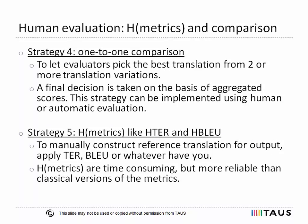The fourth strategy is one-to-one comparison of machine translation systems, which is sometimes considered a sub-technique of ranking. Evaluators are asked to choose the best translation from two or more machine translation outputs. A general recommendation is not to provide evaluators with more than three systems at a time for fair comparison. A final decision is taken on the basis of aggregated scores. This strategy is widely used for fast and raw estimation of machine translation quality.